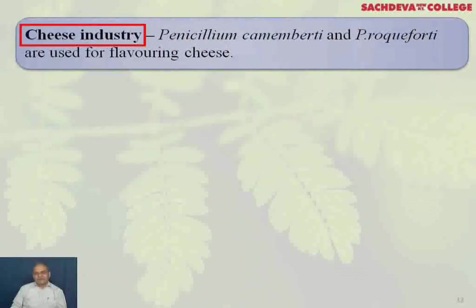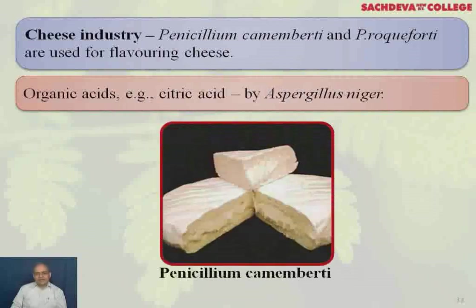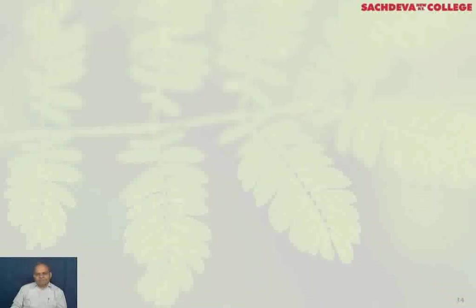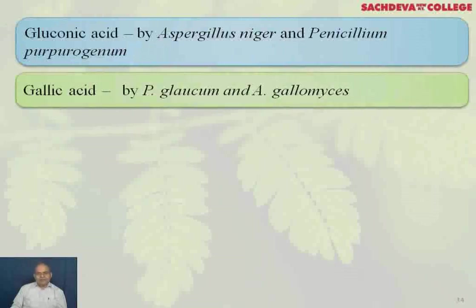In the cheese industry, Penicillium camemberti and Penicillium roqueforti are used for flavoring cheese, and the cheeses are named after them: Camembert cheese and Roquefort cheese. Organic acids produced by fungi include citric acid from Aspergillus niger, gluconic acid by Aspergillus niger and Penicillium purpurogenum, and gallic acid by Penicillium glaucum and Aspergillus gallomyces.